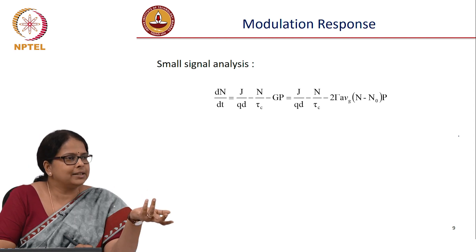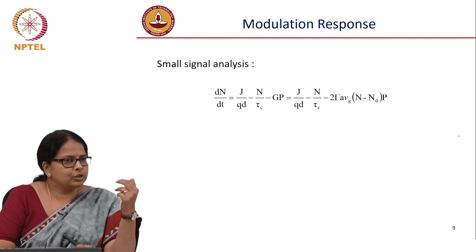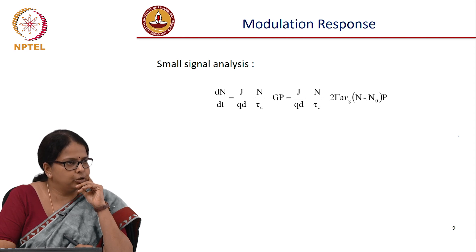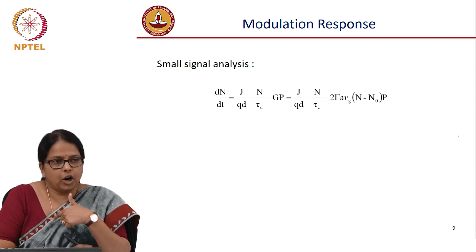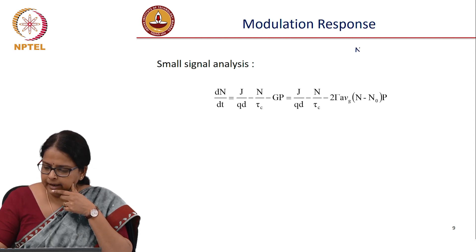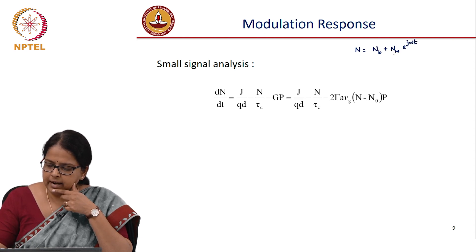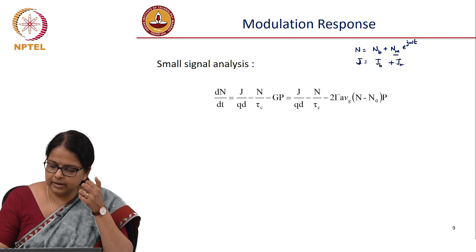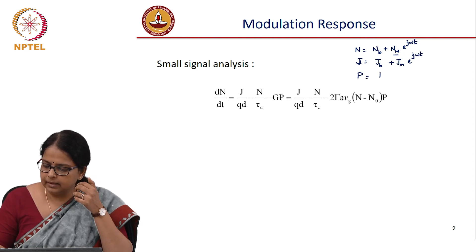In LED you only had to substitute N = N_M·e^(jωt) into the carrier density equation. But here in the laser diode, I cannot ignore the photon density — so I have to substitute into the photon density equation also. So: N = N_B + N_M·e^(jωt), J = J_B + J_M·e^(jωt), and P = P_B + P_M·e^(jωt).